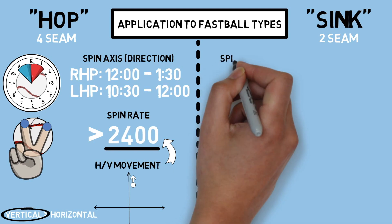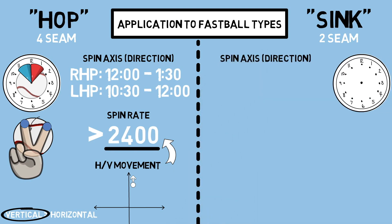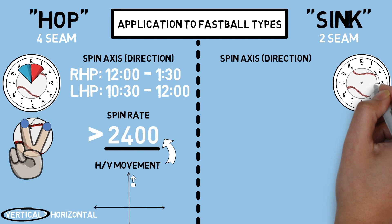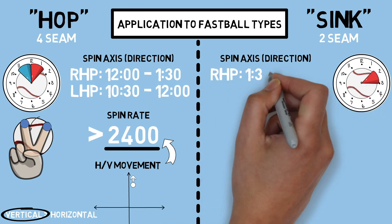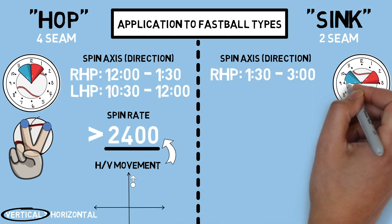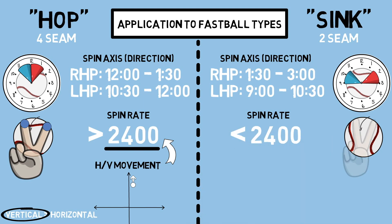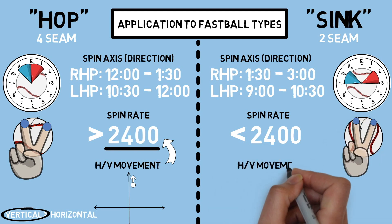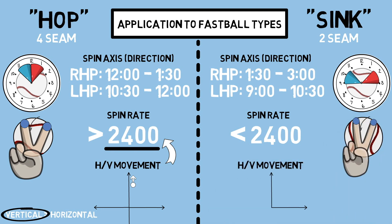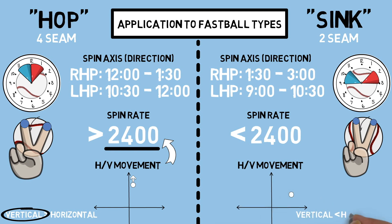Now onto sinkers, or two-seamers. Taking a look at our spin axes for this pitch, you'll see a slightly lower number for both righties and lefties. For righties, this will hit at about 1:30 to 3 o'clock, and for lefties 9 to 10:30. For our spin rate, this number is typically lower than average, which allows gravity to pull the ball down just a little bit more than our fastballs with hop. To decrease spin rate, this pitch can be thrown with your fingers off of the seams on the smooth part of the ball. This creates less friction at release, lowering your RPMs. Your output then is going to reflect a pitch with more horizontal break than vertical.